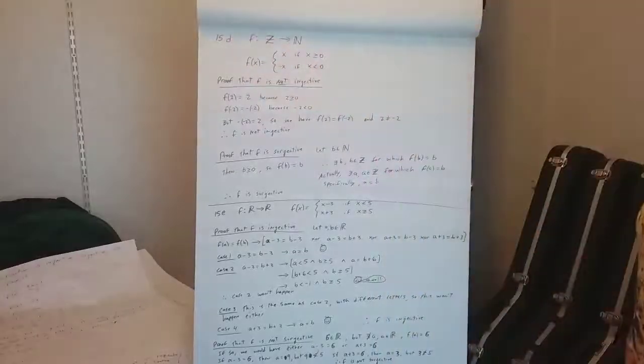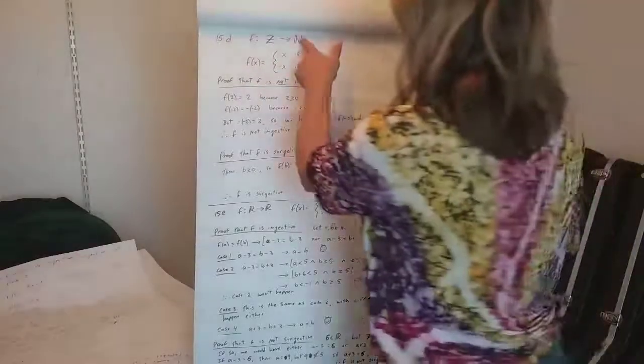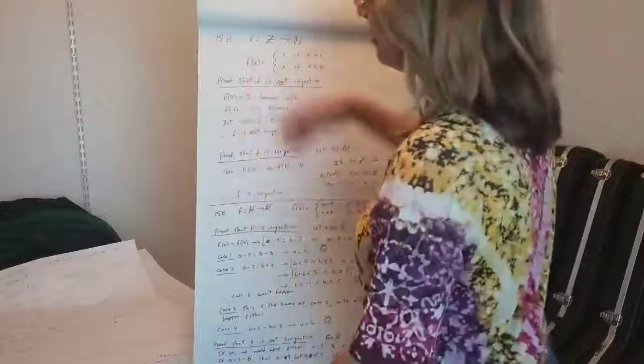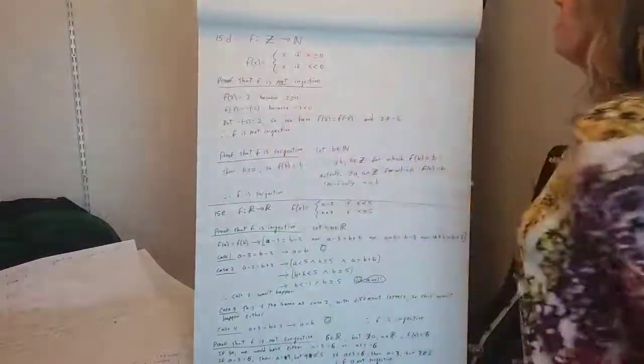Anyway, so here f goes from Z to N. I wrote there Z plus, but then I decided, oh no, let's make it zero included as well.